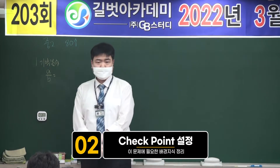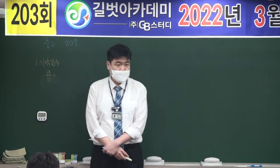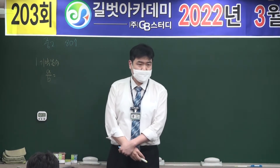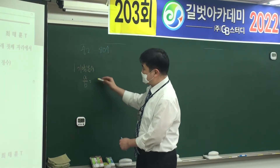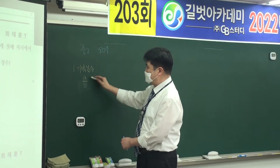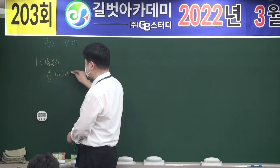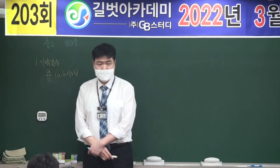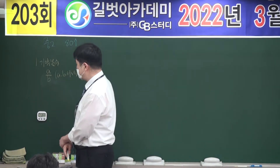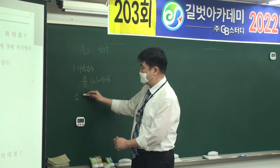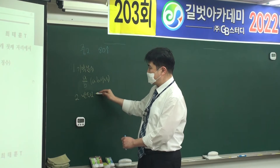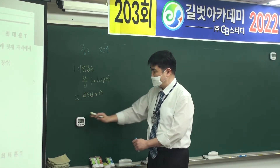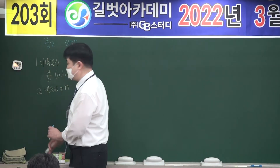자 b분의 a를 기약분수라고 했을 때, a와 b 사이에 관계가 어떻게 되겠어요? A and B are coprime. The second check point is the value of A and B — you can see how it looks.